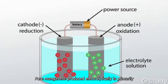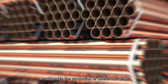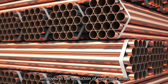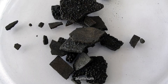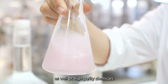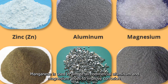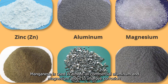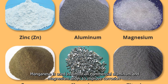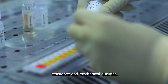Pure manganese produced electrolytically is primarily employed in the production of non-ferrous alloys of copper, aluminum, magnesium, and nickel, as well as high purity chemicals. Manganese is used in almost all commercial aluminum and magnesium alloys to improve corrosion resistance and mechanical qualities.